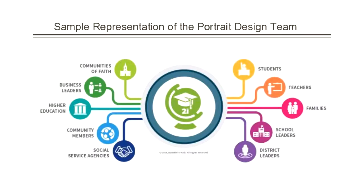So how do we go about this process? The most important part is that it involves a cross-section of our community. We'll be talking with students, teachers, families, school leaders, and district leaders, but we'll also be including communities of faith, business leaders, higher education, community members, social service agencies — getting these distinctive and unique perspectives so that we can come together as a whole community and articulate what our Fayette County Portrait of a Graduate looks like.